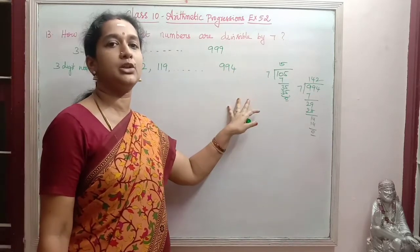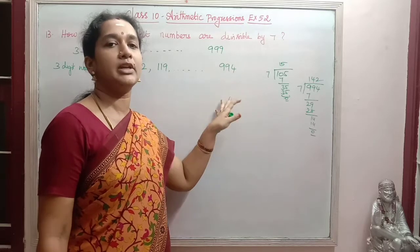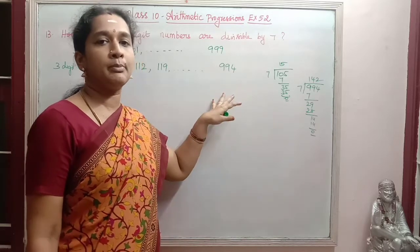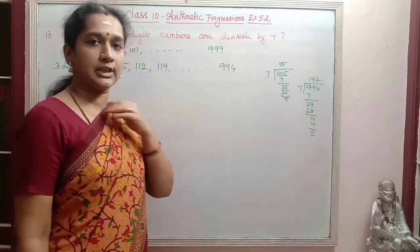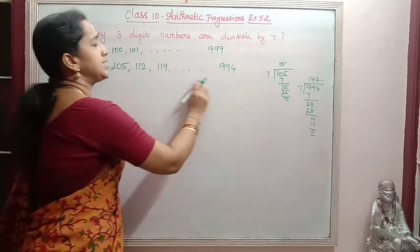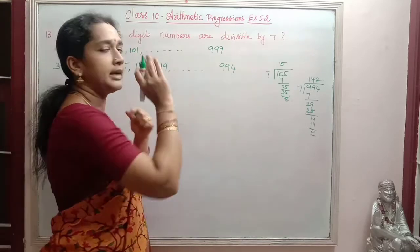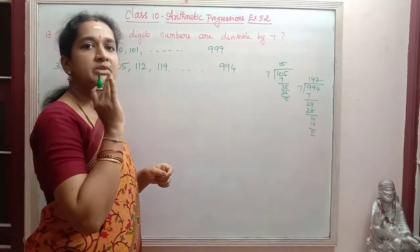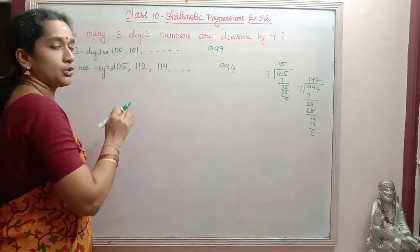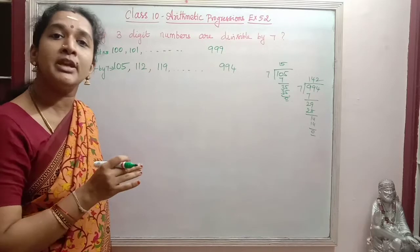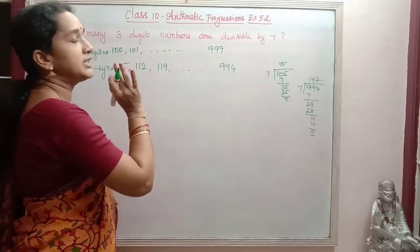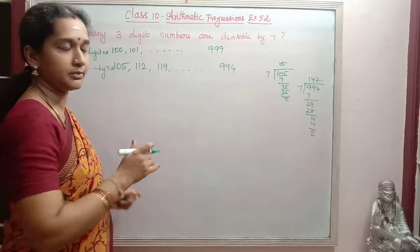If we add 7 to 994, we get 1001, which is a 4-digit number. So these are all the 3-digit numbers divisible by 7. We are asked to find how many such 3-digit numbers are divisible by 7.